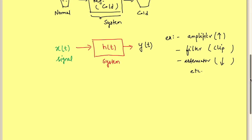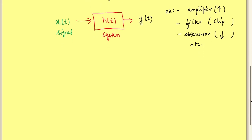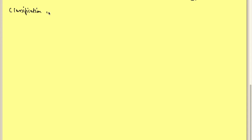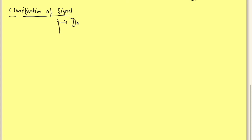Now I will classify signals. Signals are broadly classified into two categories: the first one is a deterministic signal and the other one is a random signal.